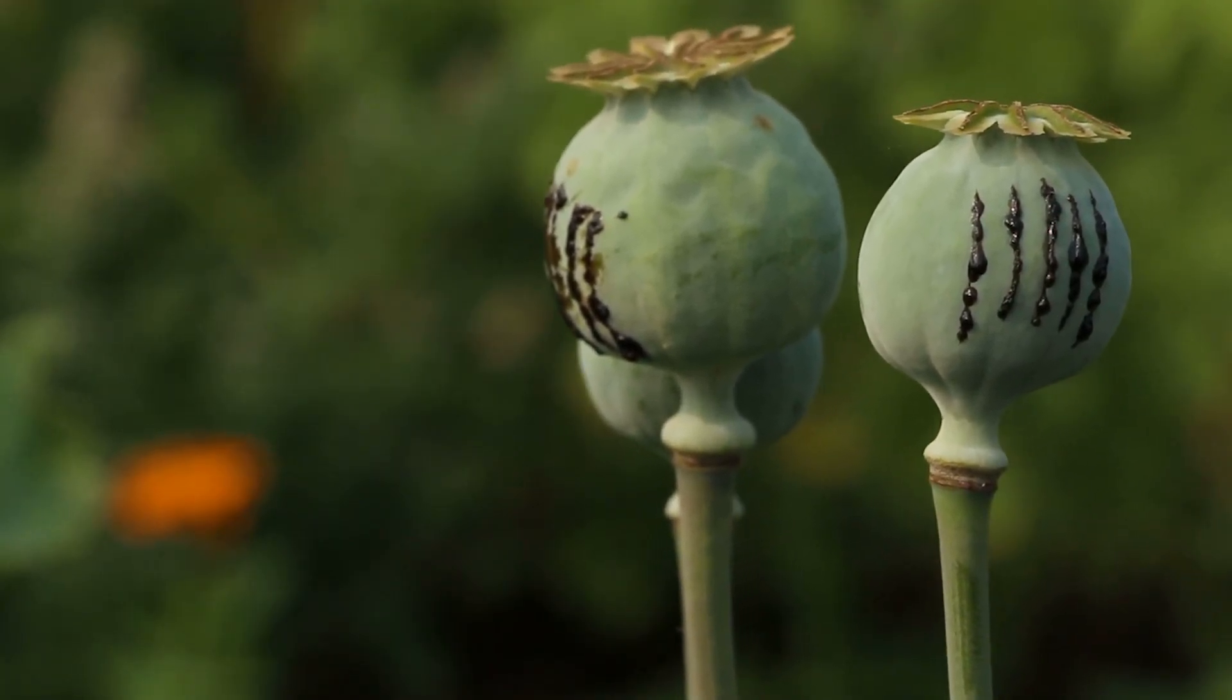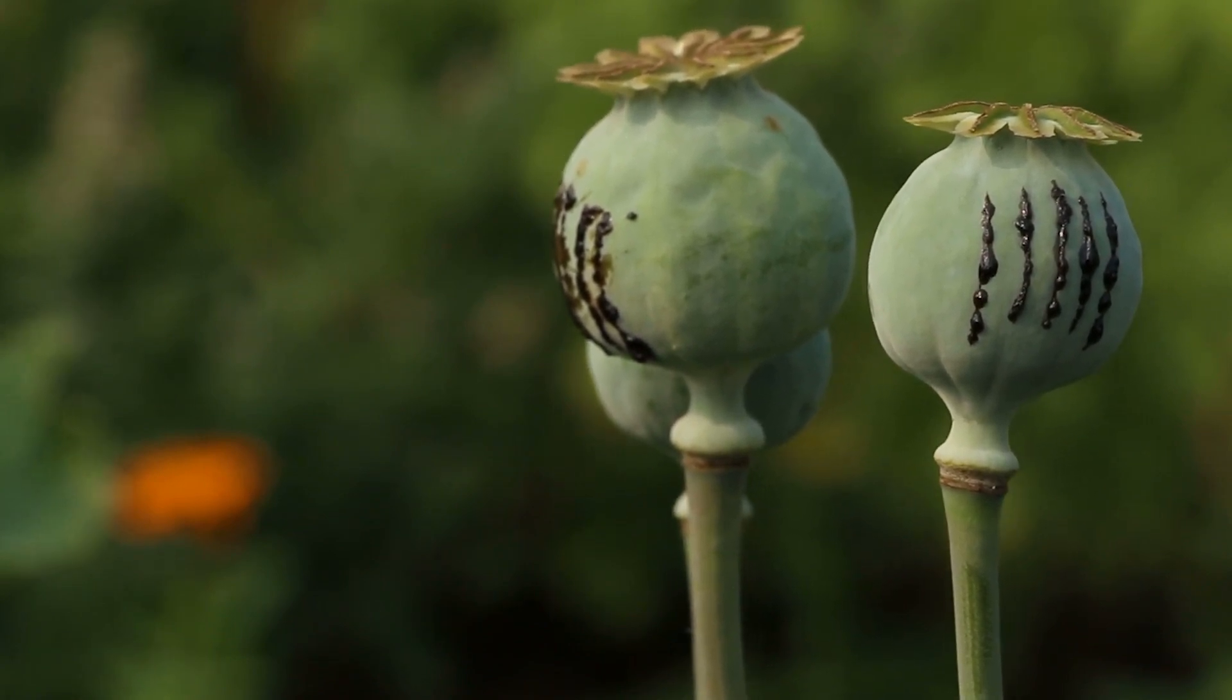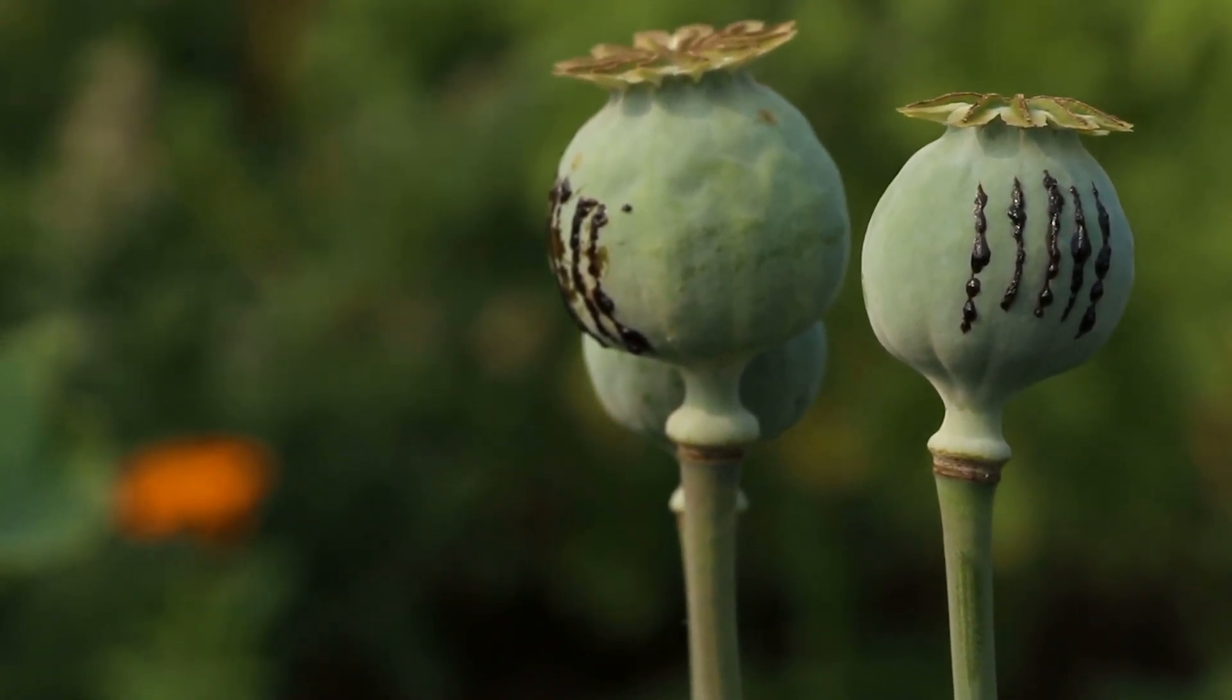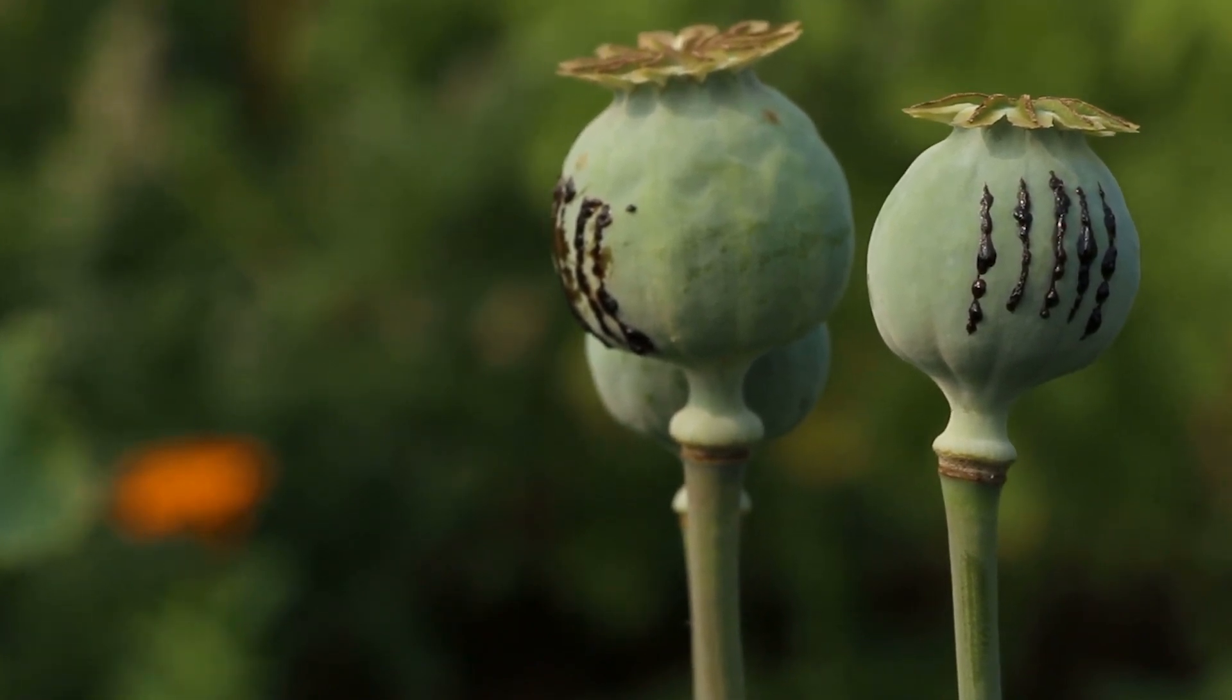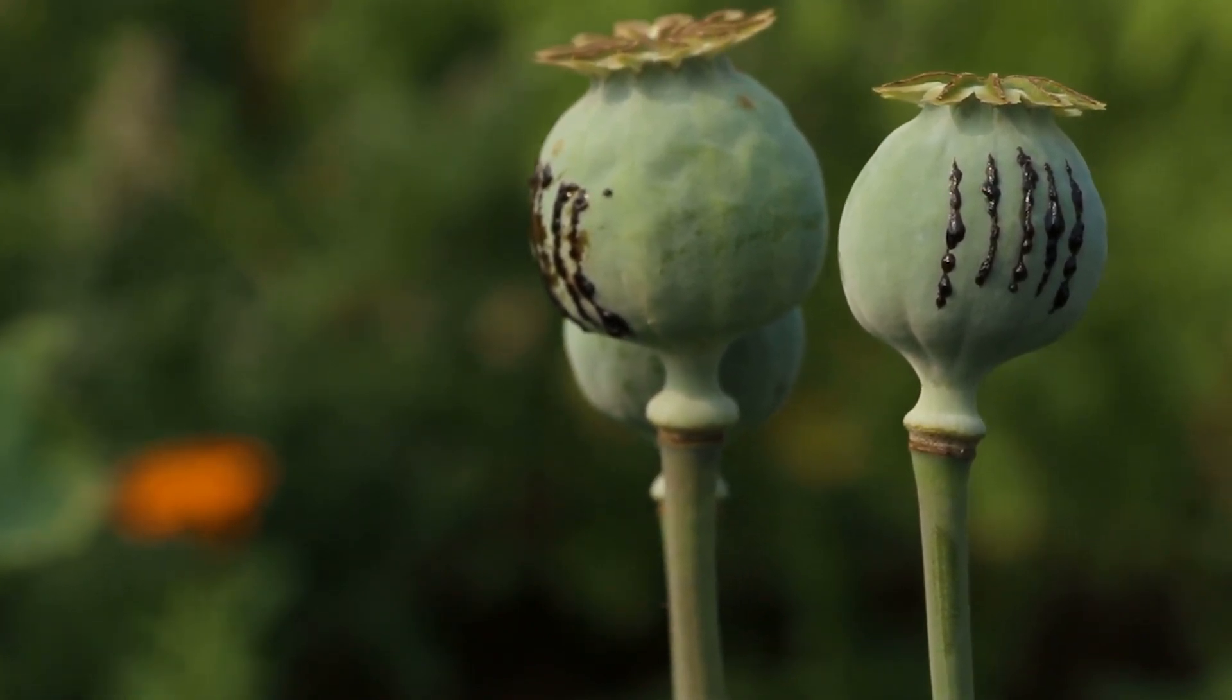Garden poppy, or Papaver somniferum, contains white jelly in the mammary glands of unripe heads, which hardens when exposed to the air into a brown, resinous substance: opium.